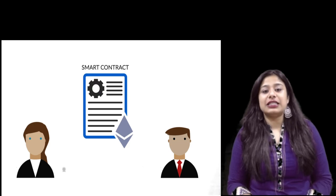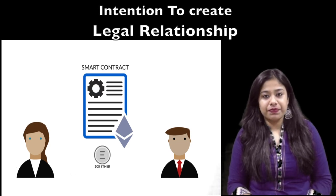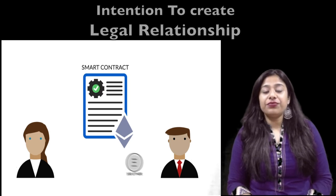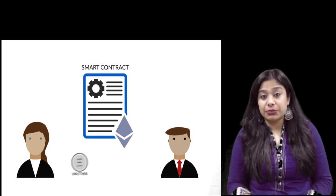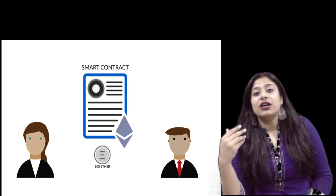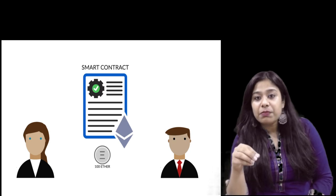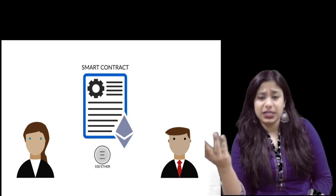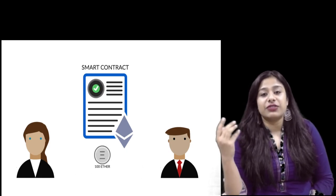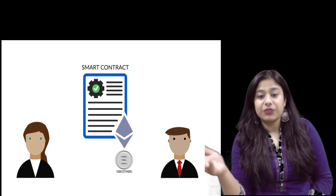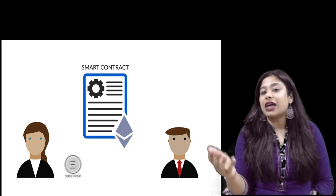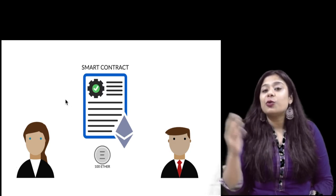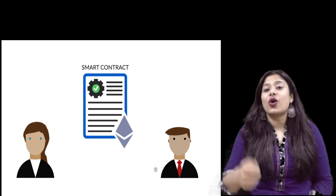The next essential is intention to create legal relationship. This means that if the performance of the contract is not possible, or one party goes against their words, then the other party who has suffered a loss can sue the party who has not performed the contract. For example, if A enters into a contract with B to sell his car for rupees 1 lakh and B takes the car without paying, A can sue B for such non-performance. This is called legal relationship.